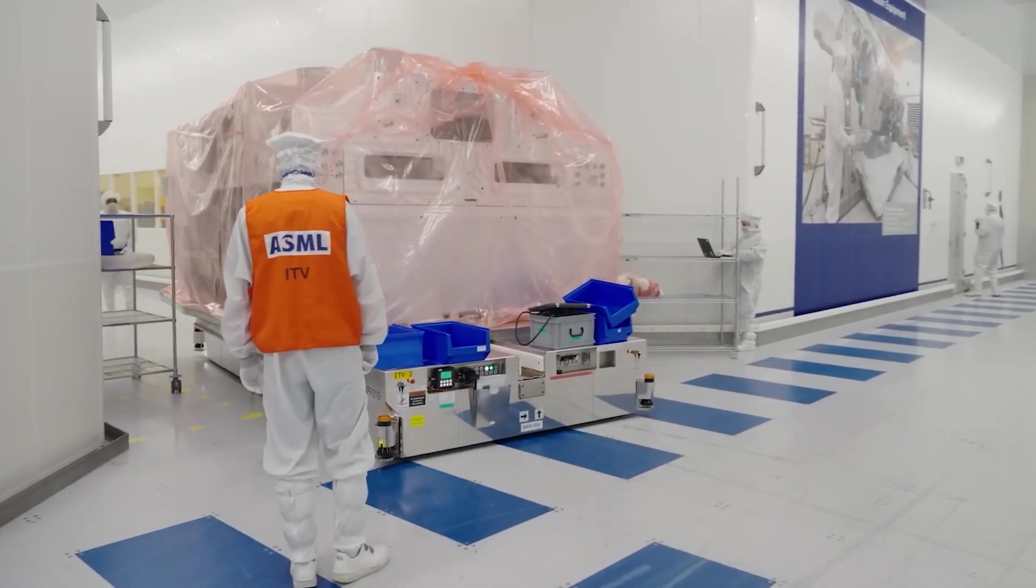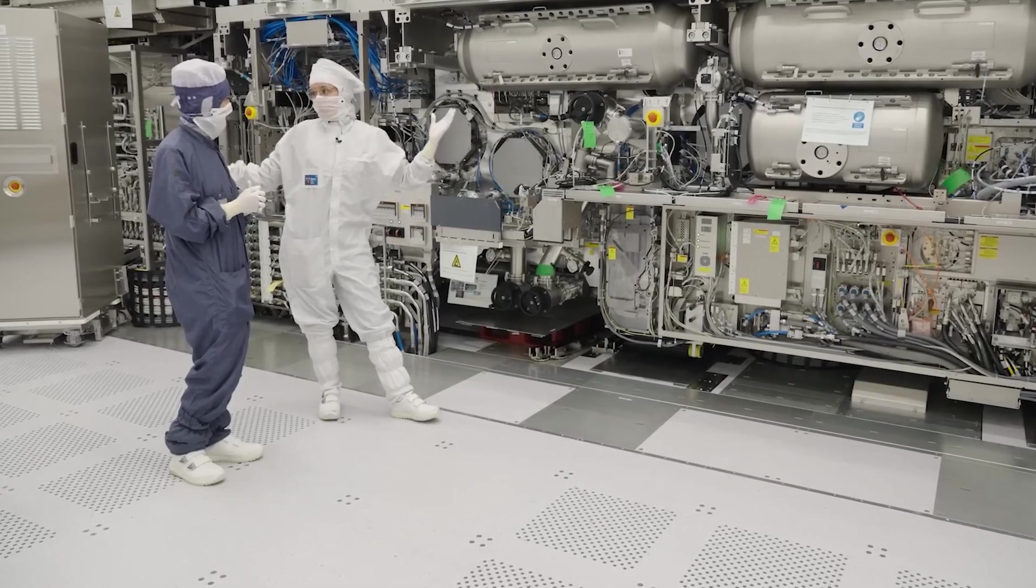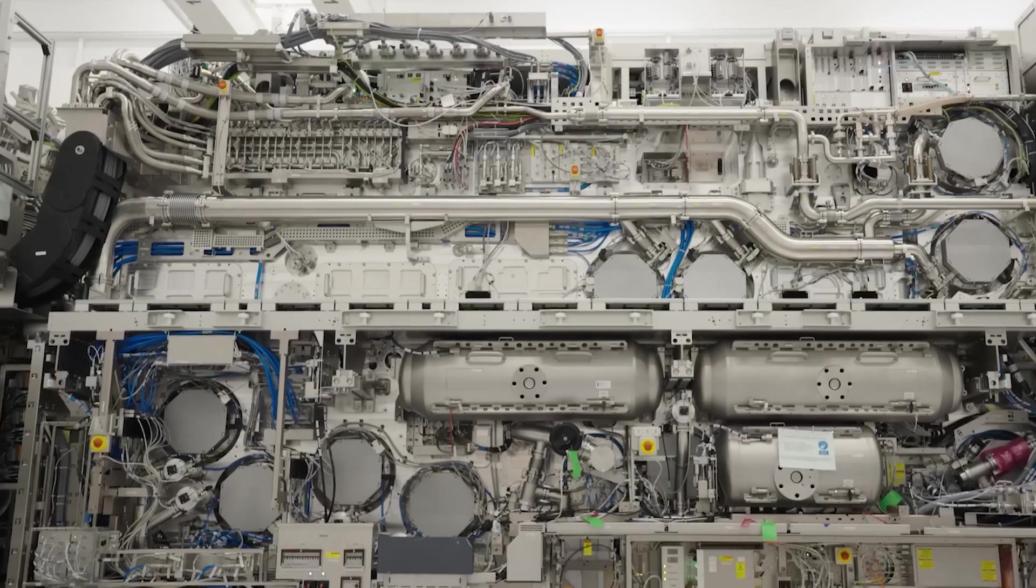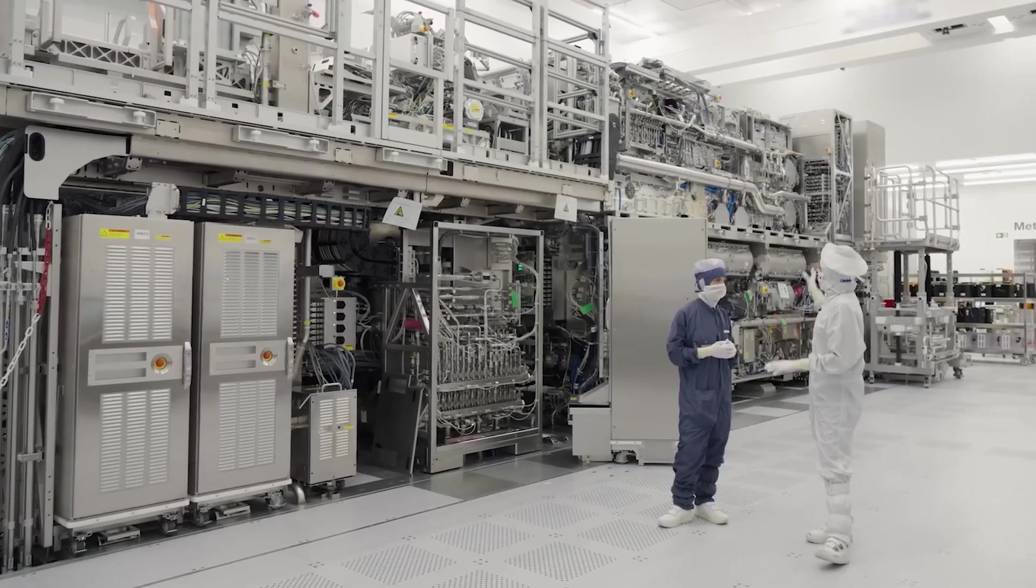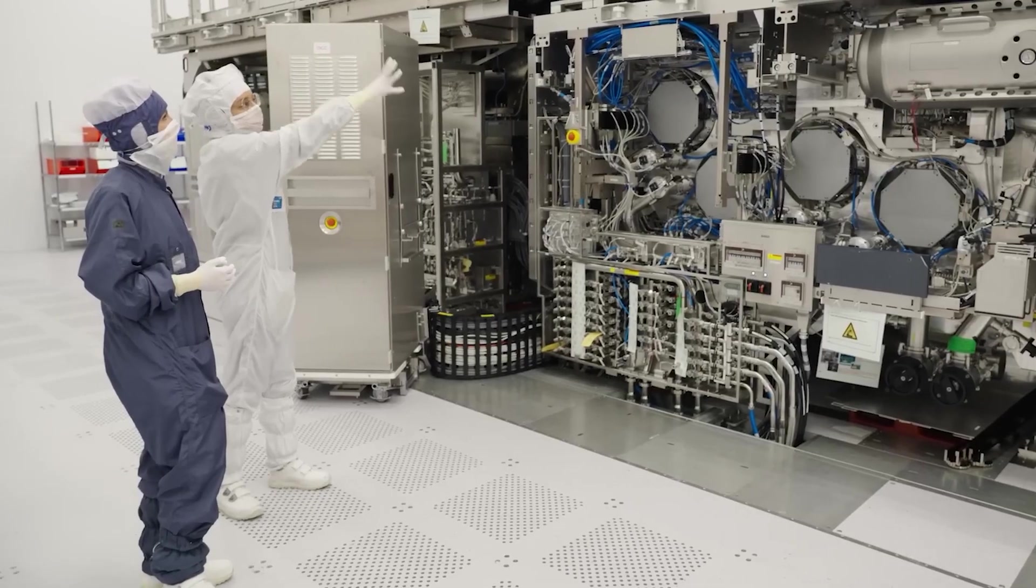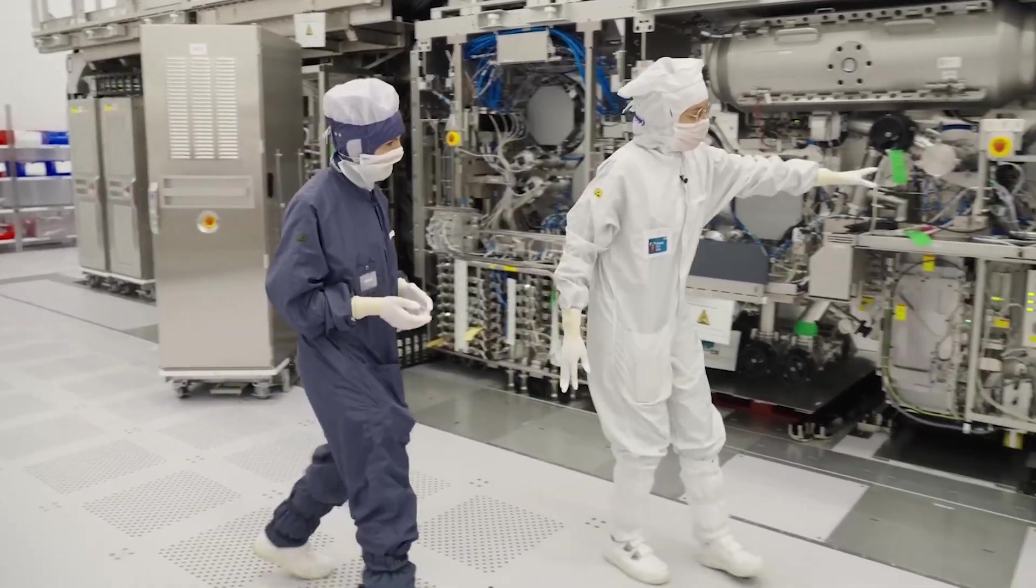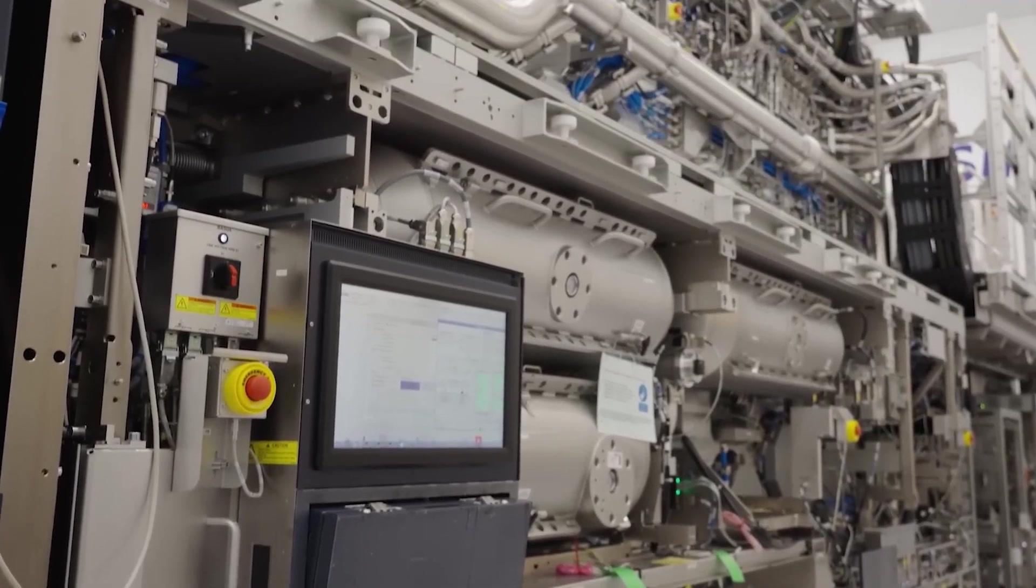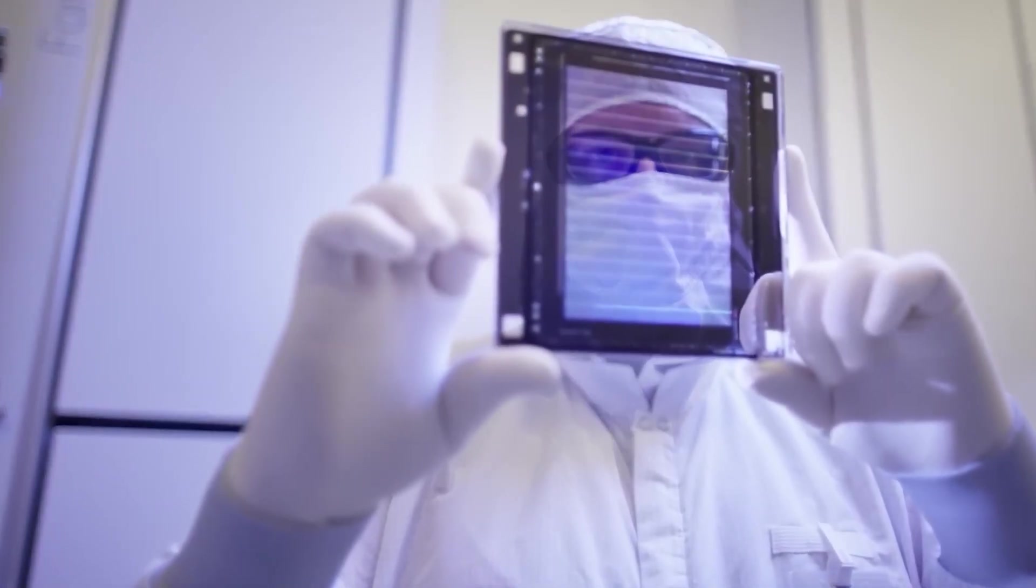This brings us directly into the two-nanometer chip race. TSMC, Samsung, and Intel are all racing toward mass production. TSMC plans risk production in 2025. Samsung aims for 2025 as well with its second-generation gate all-around technology. Intel, trying to reclaim leadership, is pushing its 18A node as a competitive alternative. But the real challenge for all three is the same: manufacturing capacity. Whoever achieves stable, high-yield, two-nanometer manufacturing first will define the next decade of AI and computing.